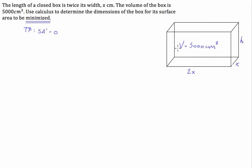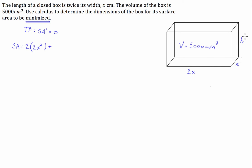What we've got here is we're looking for the surface area of this box. So our objective function, the function that we're going to try and minimise, is going to be the surface area of this box, equal to basically all of the sides added together. Starting with the bottom and the top: the area is going to be 2x times x, multiplied by 2.